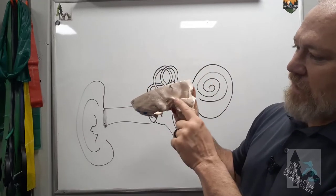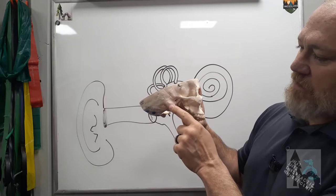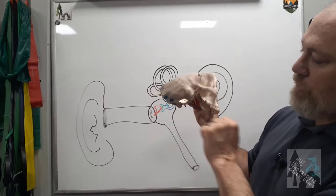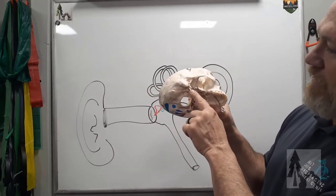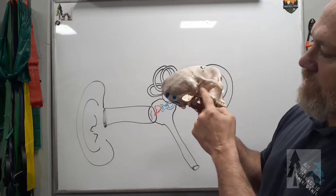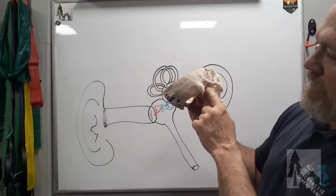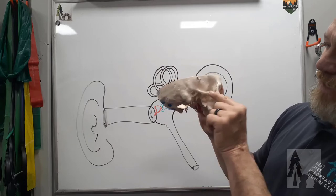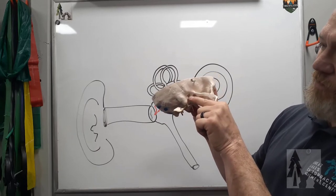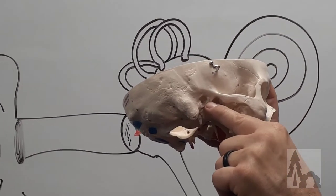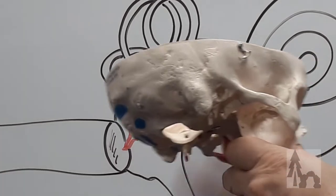The temporal bone contains a few things: the zygomatic process, this mastoid process toward the posterior aspect, underneath you got a styloid process, the little mandibular fossa, and then right posterior to that, kind of in line with the zygomatic process is this external auditory meatus, that little ear hole there.